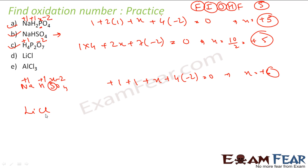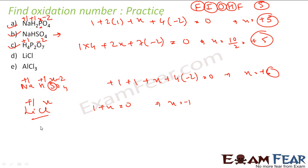Let's do LiCl. Free element — can't apply. Ion — can't apply. No oxygen, no hydrogen, no fluorine. So we can't apply any of those rules. Apply group 1: lithium is group 1, so it's plus 1. Chlorine is x. Sum rule: 1 plus x equals 0, so x equals minus 1. Chlorine is minus 1.